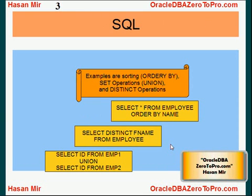This first example is displaying an ORDER BY operation — we are trying to sort the result by the name column, which requires disk space. The second example shows the DISTINCT operation — we are trying to select distinct values from the F-name column from the employee table. And here is a simple SET operation, such as UNION or MINUS, where we are unioning two sets.